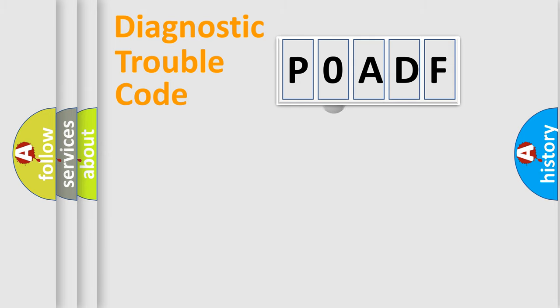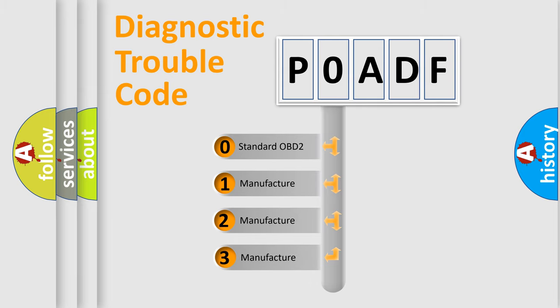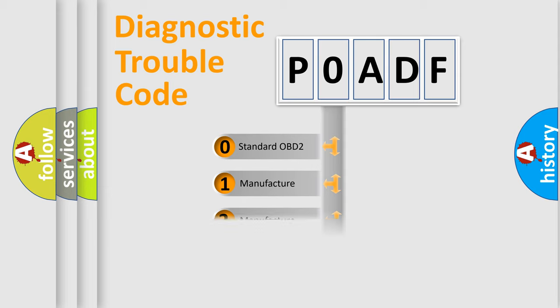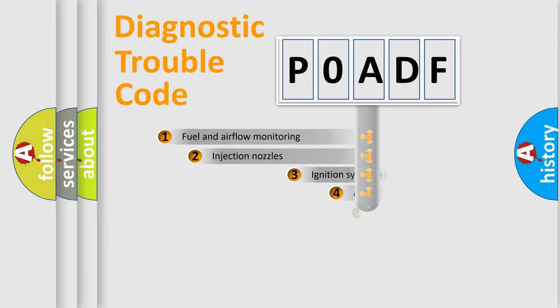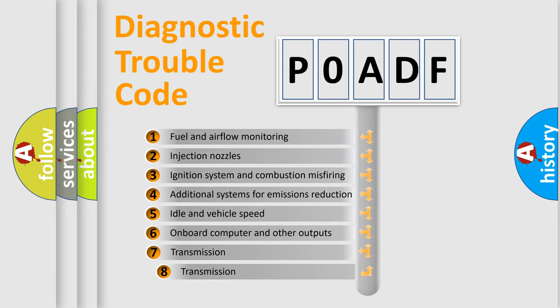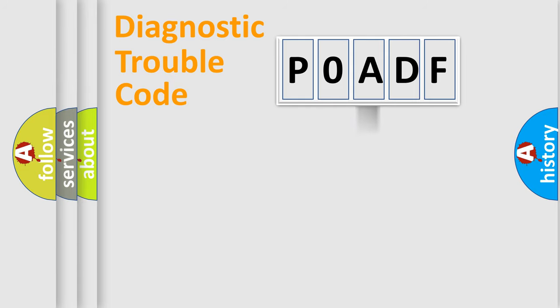This distribution is defined in the first character of the code. If the second character is expressed as zero, it is a standardized error. In the case of numbers 1, 2, or 3, it is a more manufacturer-specific expression of the car-specific error. The third character specifies a subset of errors. The distribution shown is valid only for the standardized DTC code.